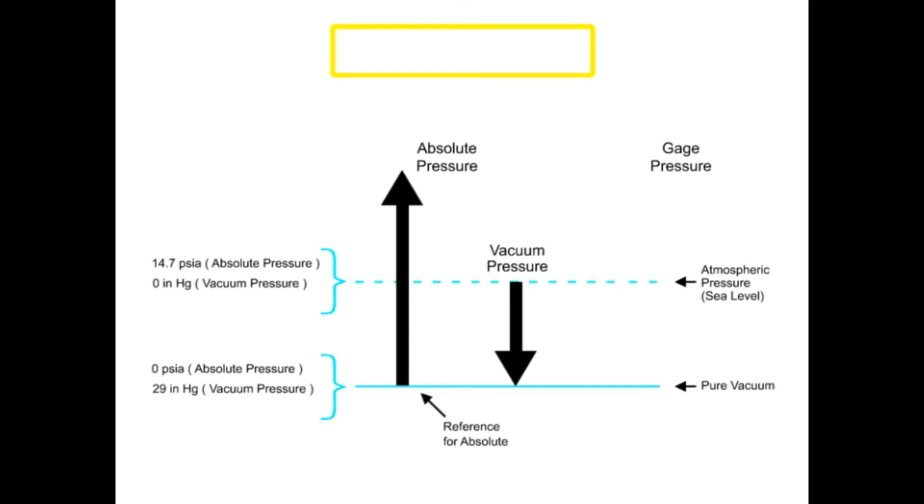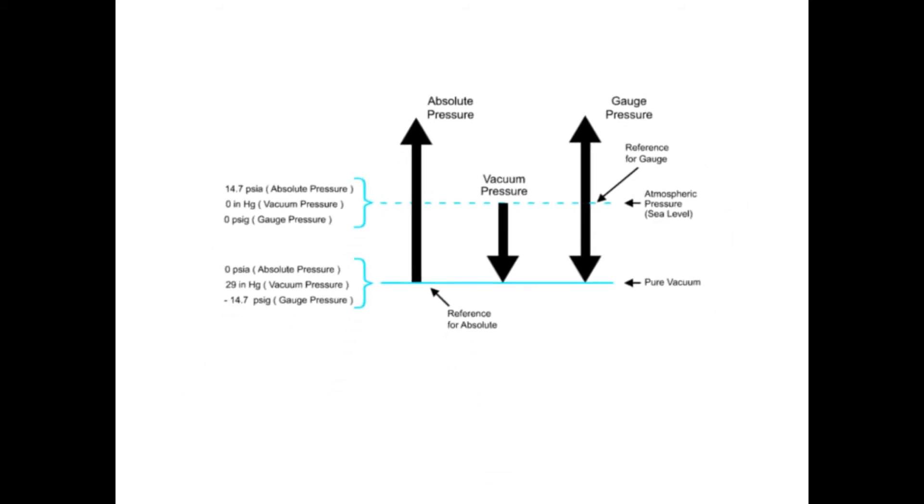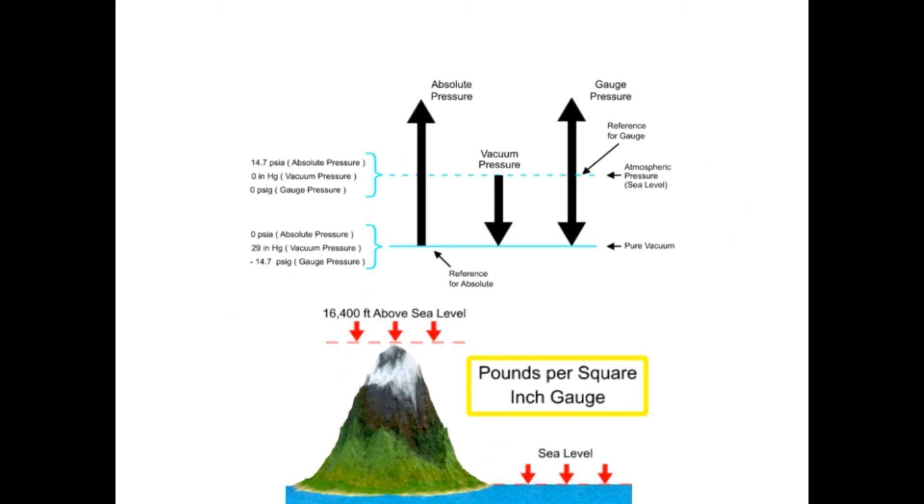Gauge pressure scale uses atmospheric pressure as the reference. The unit of measurement for gauge pressure is pounds per square inch gauge, abbreviated as PSIG.